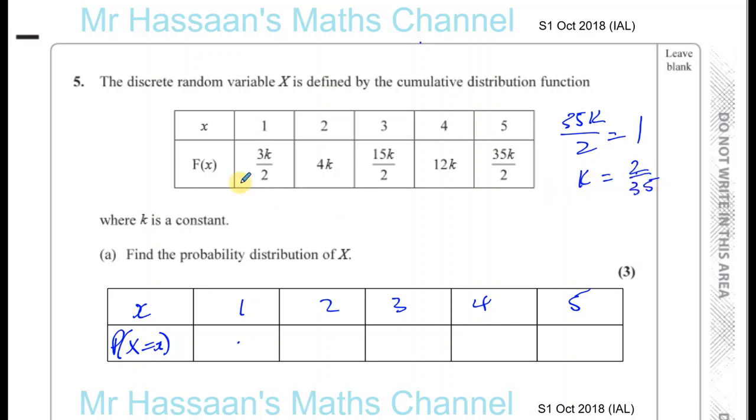So now k equals 2 over 35, I can find what these are. So I've got 3 times, 3 over 2 times 2 over 35, 2's cancel, leaving you with 3 over 35. So I know that that is 3 over 35. I'll just write that over here underneath. This is the actual value of fx, rather than in terms of k, once we've found k. So this is also fx, but the actual value is fx.